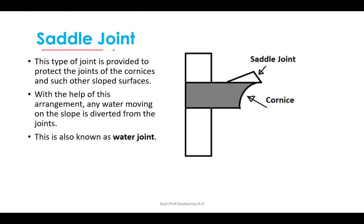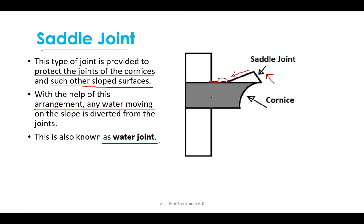The last type of joint is the saddle joint, provided to protect the joints of cornices and other sloped surfaces. With this arrangement, water moving on the slope is diverted from the joint, which is why it is also called a water joint. The saddle is beveled backwards from the front edge. That's all about stone joints. Thank you for today and we'll continue in the next lecture.